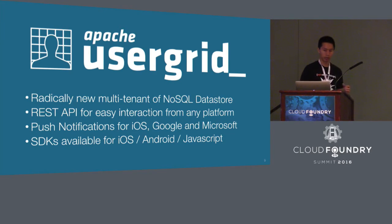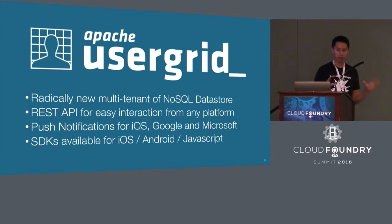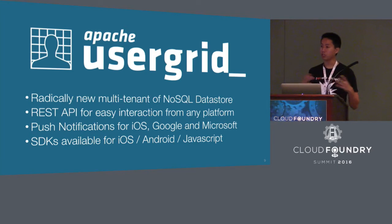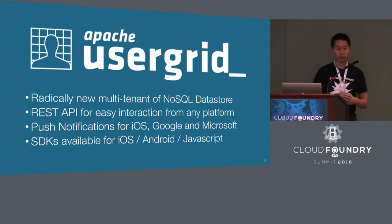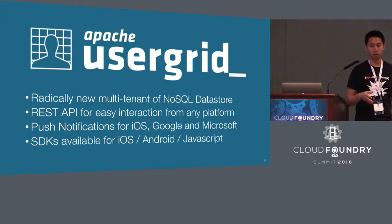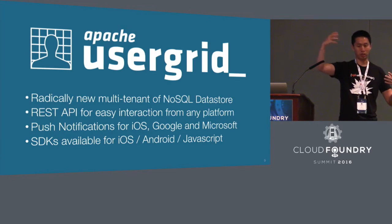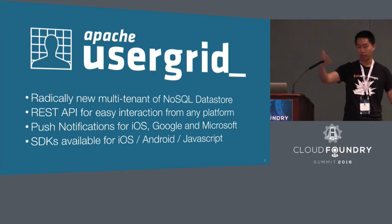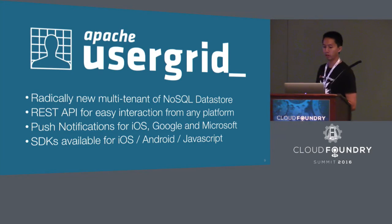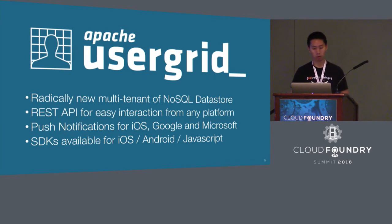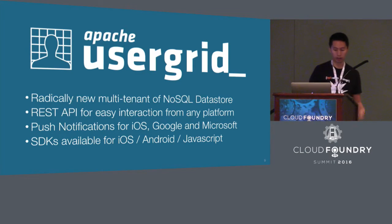What's a different approach? The approach that Apache UserGrid uses is a radically new way to create a multi-tenant data service on top of a single Cassandra cluster. It has an out-of-the-box API, so you don't have to stand up another lightweight scripting language in another container. It has a bunch of out-of-box capabilities especially for mobile, like push notifications, and has SDKs for Android, iOS, and JavaScript.